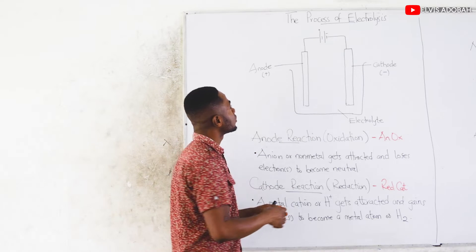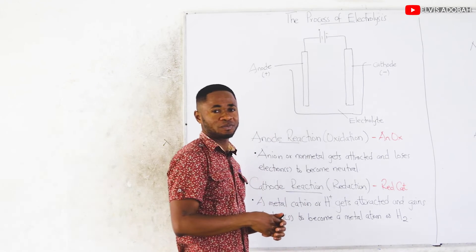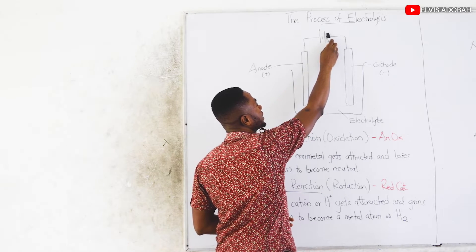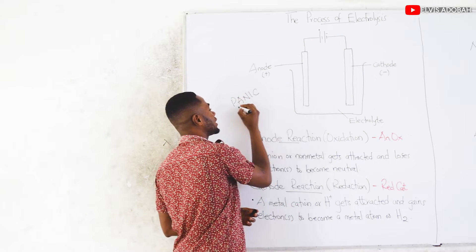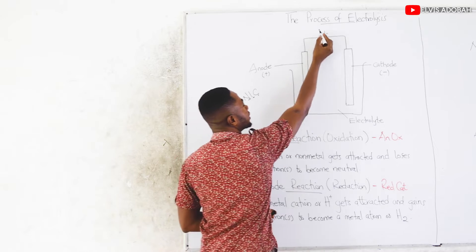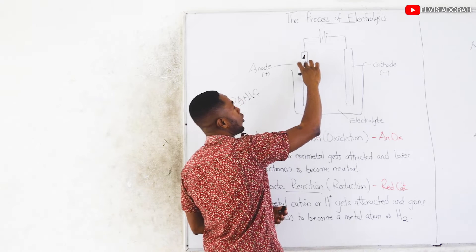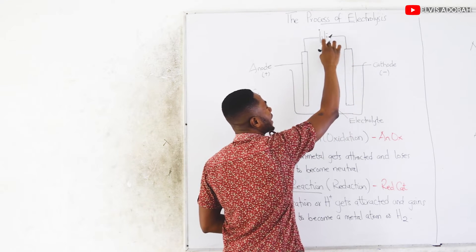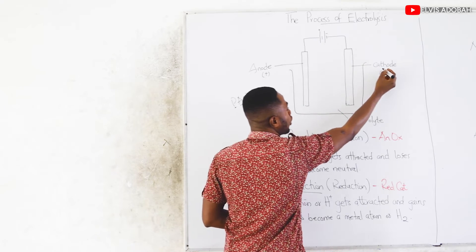In our electrolytic cell, we hook the electrodes up to a battery. The long line in the battery represents the positive terminal, and the short line represents the negative terminal. In electrolysis, the positive part is called the anode and the negative is the cathode. So the positive end of the battery is connected to this electrode, so this electrode is going to be positively charged — therefore we call it the anode. The other electrode is hooked up to the negative terminal of the battery, so we call it our cathode.